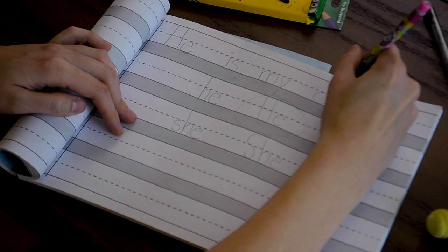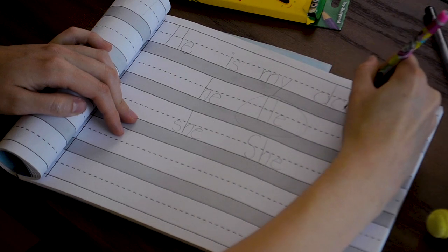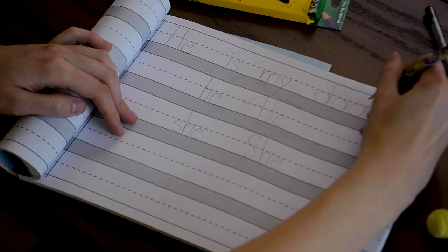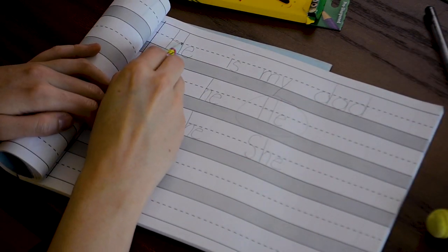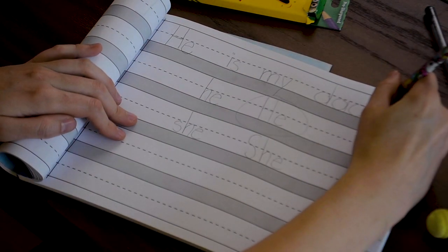So you would write d, a, d. What is it? Dad. And don't forget, so that it's a sentence, it has to be uppercase and it has to have an end mark, a period.